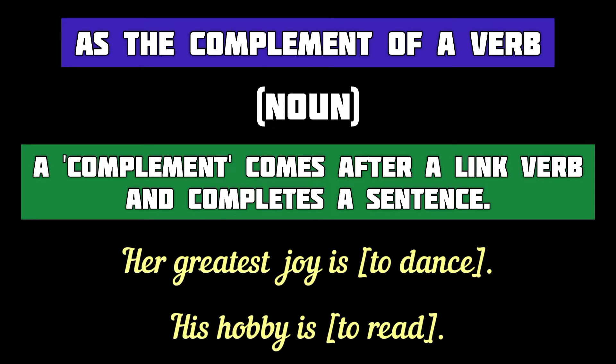The infinitive may also come in the sentence as the complement of a verb — in such a case, it is used as a noun. A complement is a word or phrase that completes the sense of a sentence. For example: 'Her greatest joy is to dance.' Here 'to dance' is an infinitive used as the complement of the verb 'be' (is). 'His hobby is to read.' Here 'to read' is an infinitive serving as the complement. Without them, the sentences are incomplete.